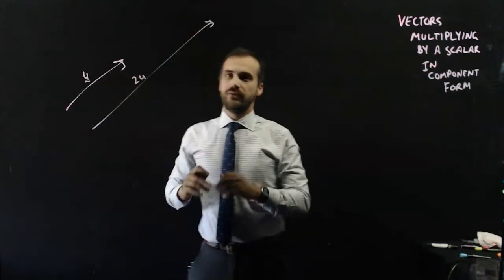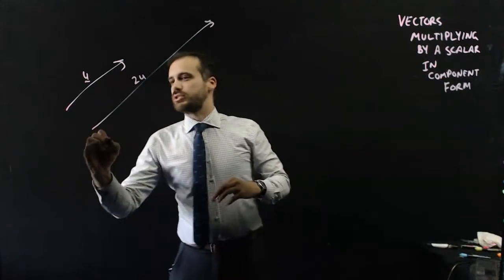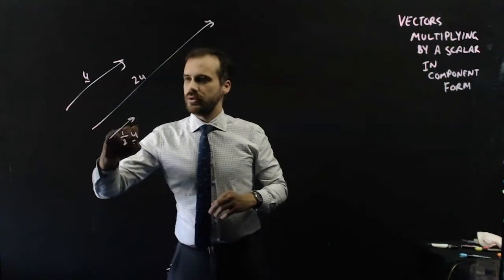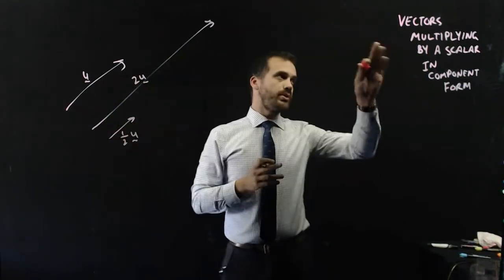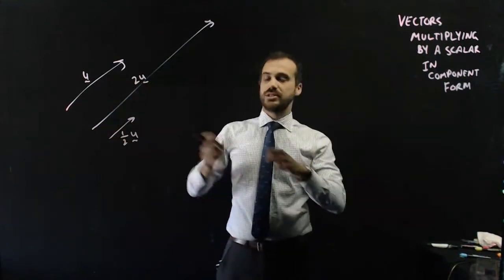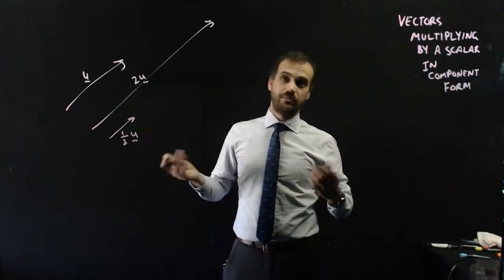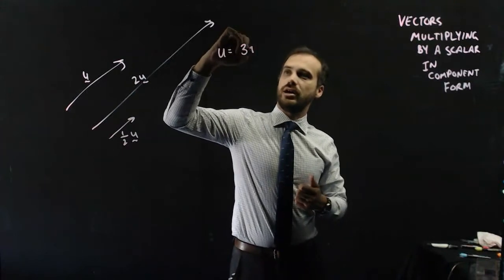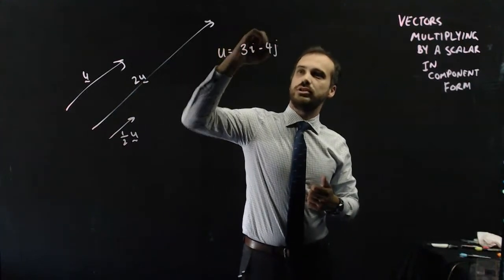2u, and if we want to halve the length of u, we just write it like this, and that's half u. So, what do we do if our vector is expressed not as an arrow, but in component form? Let's say that u is equal to 3i minus 4j.